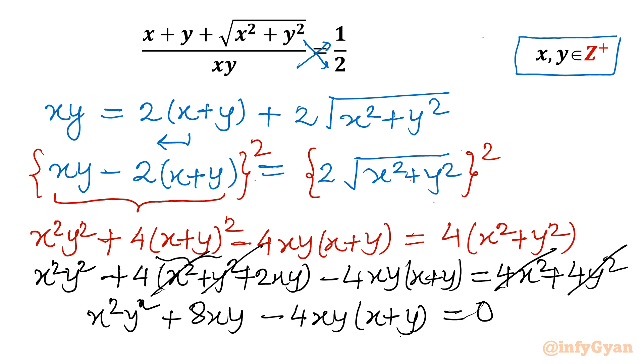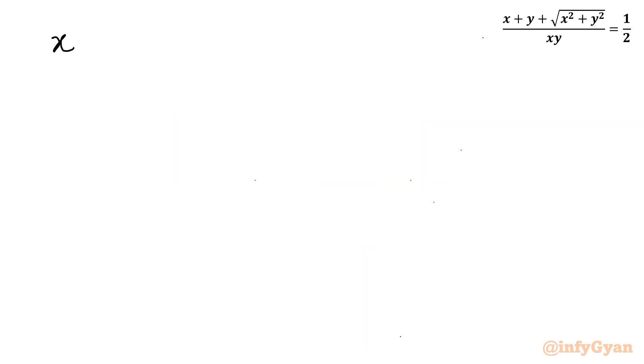Now you can see xy is common. So once I will take xy common it would be xy minus 4 times x plus y plus 8 equal to 0. Now if you will see f dot g equal to 0, so either f equal to 0 or g equal to 0. So if I will write xy equal to 0, is this value acceptable?